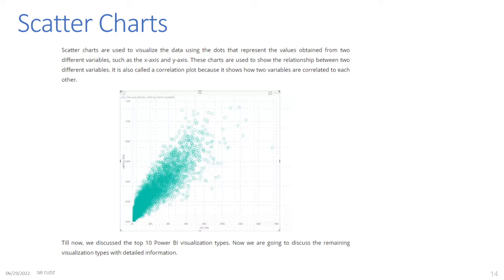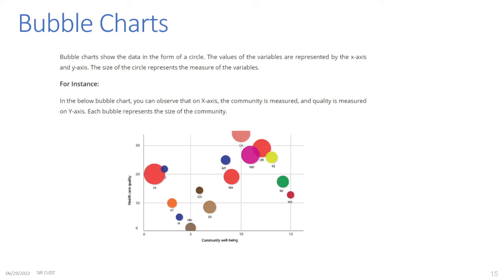Bubble Charts: Having discussed the top 10 Power BI visualization types, we now move to remaining types. Bubble charts show data in the form of circles. The values of the variables are represented by the x-axis and the y-axis, while the size of the circle represents the measure of the variables — the bigger the circle, the higher the value. In the bubble chart example, the x-axis measures community size and the y-axis measures quality, and each bubble represents the size of that community.